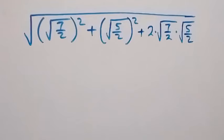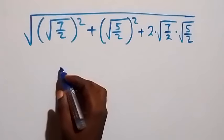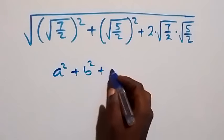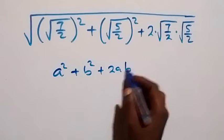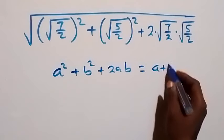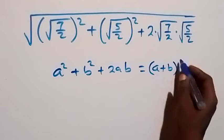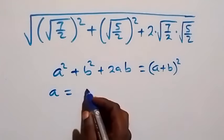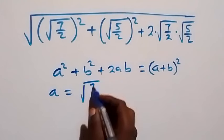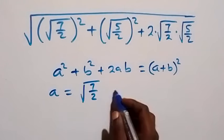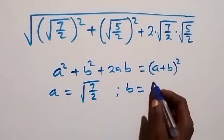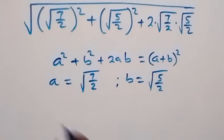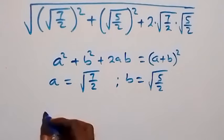From here we compare this with: a squared plus b squared plus 2ab, which is equal to a plus b all squared. In this case it implies that a is the same thing as root 7 over 2, and b is the same thing as root 5 over 2. Then what we have here becomes square root of...